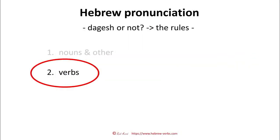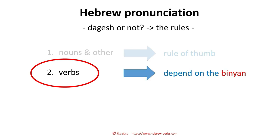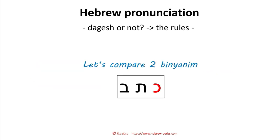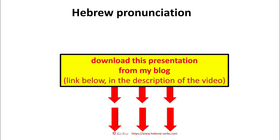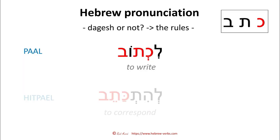In this video we talk about the verbs, and as I mentioned already in the last video, the rules for the verbs depend on the binyan. So let's compare two binyanim with this root here that starts with kaf. Like always, you can download these presentations from my blog — the link to the blog post is in the description of this video. Now in Paal with this root we have...